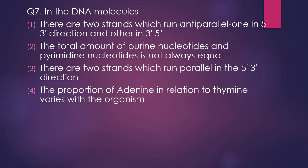Question 7. In the DNA molecule: statement 1 — there are two strands which run anti-parallel, one in 5' to 3' direction and other in 3' to 5' direction; statement 2 — the total amount of purine nucleotides and pyrimidine nucleotides is not always equal; statement 3 — there are two strands which run in the 5' to 3' direction; statement 4 — the proportion of adenine in relation to thymine varies with the organism. The correct answer is option 1 — the two strands run anti-parallel, one in 5' to 3' and the other in 3' to 5' direction.